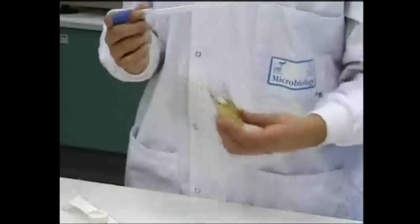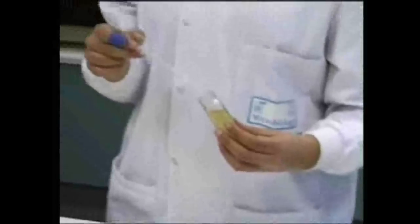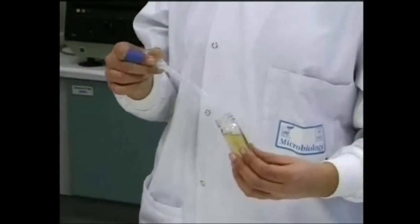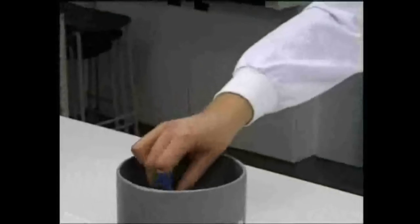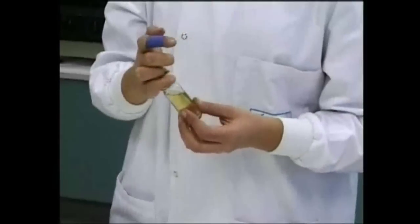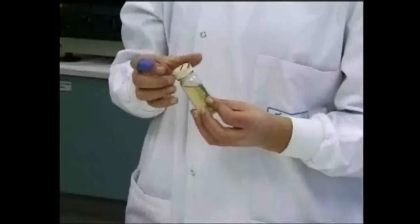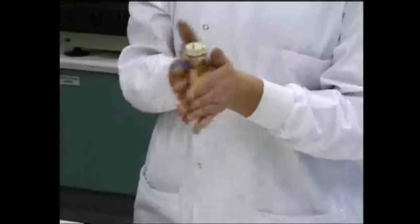The medium bottle is then opened and flamed and inoculated. The bottle is then reflamed, the top is replaced, and the pipette is disposed of. Then, to mix the culture and medium, the bottle is gently rotated in the palms. This prevents bubbles developing in the agar.